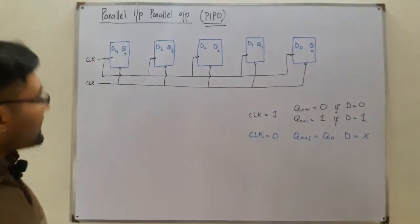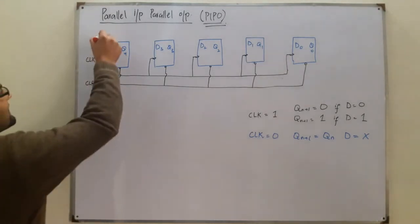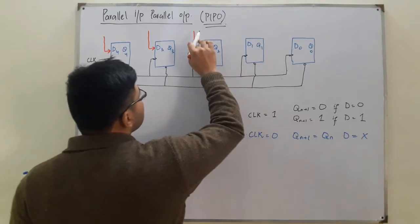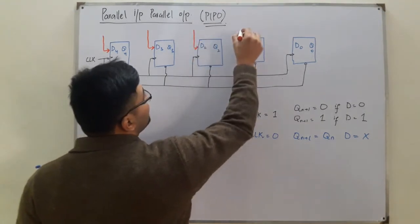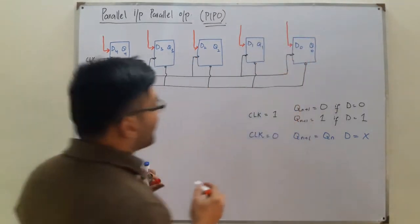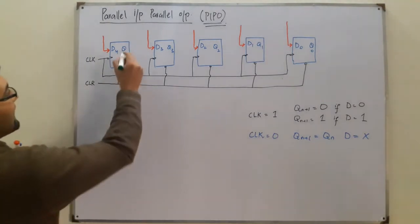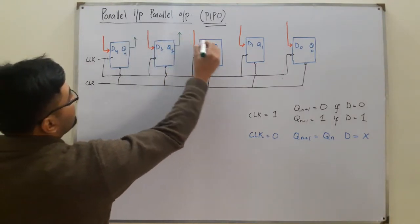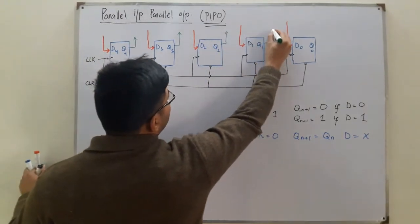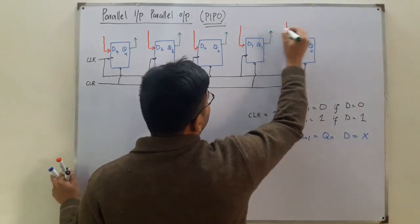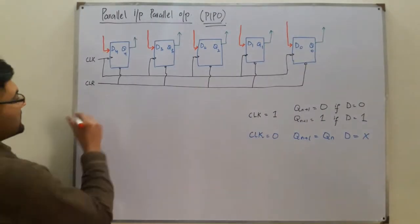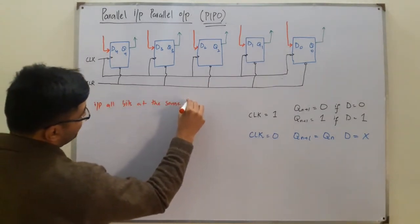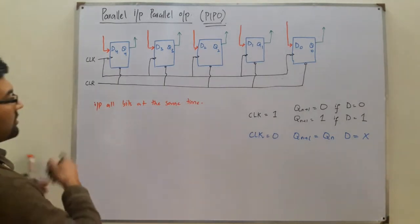In the Parallel Input Parallel Output circuit, parallel inputs mean we provide everything at the same time. Each and every input is accessible to us, and similarly each and every output is also accessible. We can input all bits at the same time and retrieve all bits at the same time.